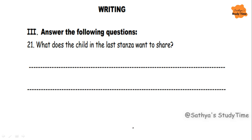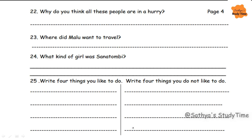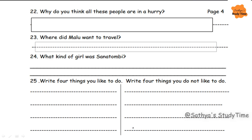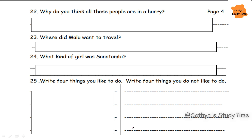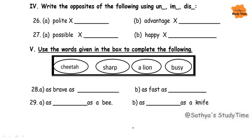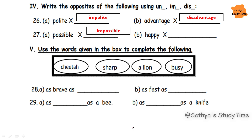These are the question answers from your textbook. You can refer your textbook and write down the answers for these questions. Next question: write four things you like to do and four things you do not like to do — this you can write easily. Next, write opposites using the prefixes 'dis' and 'im': polite becomes impolite, advantage becomes disadvantage, possible becomes impossible, happy becomes unhappy.